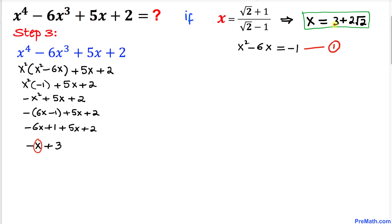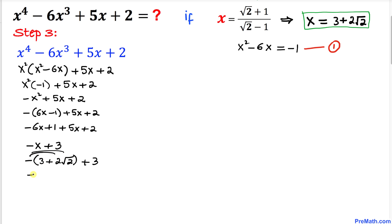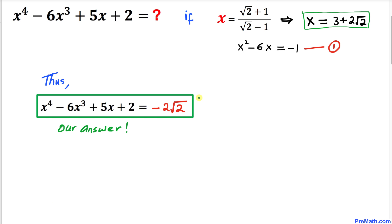We know that x = 3 + 2√2, so we replace x: -(3 + 2√2) + 3. Distributing the negative sign gives -3 - 2√2 + 3. The +3 and -3 cancel, so we get -2√2. Thus the value of this polynomial turns out to be -2√2. Thanks for watching and please don't forget to subscribe to my channel for more exciting videos. Bye!